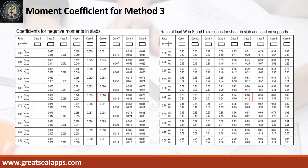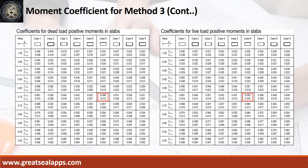Use case 6 at m equals 0.75. Refer to coefficients for negative moments and shear computations. Use case 6 at m equals 0.75 and refer to coefficients for dead load and live load positive moments.